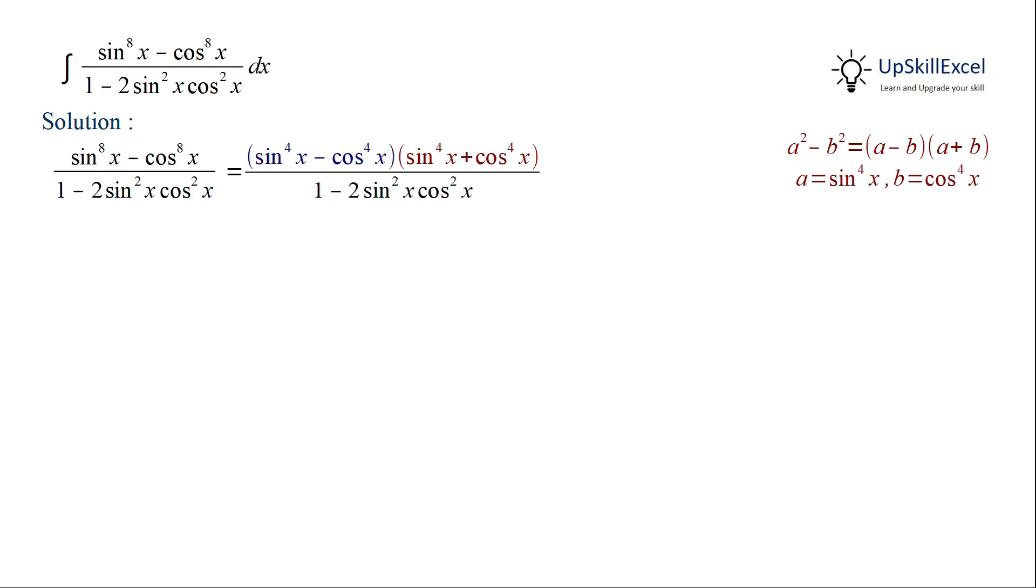So our numerator can be written as sin x power 4 minus cos x power 4 multiply by sin x power 4 plus cos x power 4. Here the first term is again of the format a square minus b square, where a is equal to sin square x and b is equal to cos square x. So our first term can be expanded to sin square x minus cos square x multiply by sin square x plus cos square x.